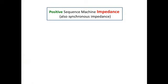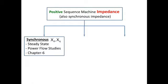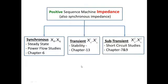If we divide the positive sequence impedance of the machine, or the synchronous impedance, we will have some synchronous reactance, some transient reactance, and similarly some sub-transient reactance. The synchronous reactance we will study in Chapter 6, after finishing symmetrical and unsymmetrical faults. About the transient reactance we are going to study in Chapter 13, and about the sub-transient reactance we will study in Chapters 7 and 9.